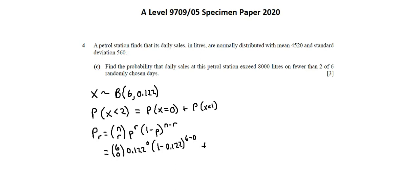plus the binomial coefficient of 6, 1, times 0.122 to the power of 1, times 1 minus 0.122 to the power of 6 minus 1. When I simplify, I arrive at the probability of 0.840.